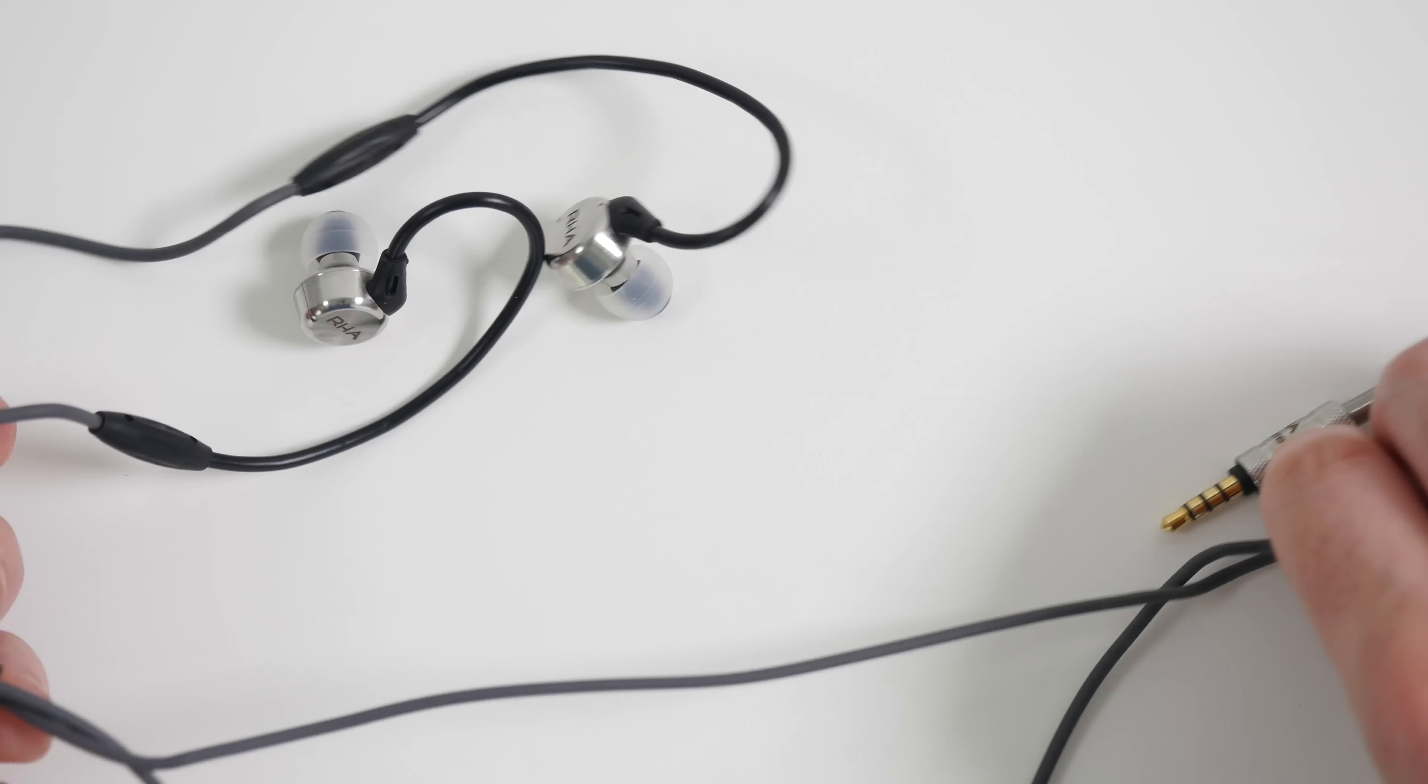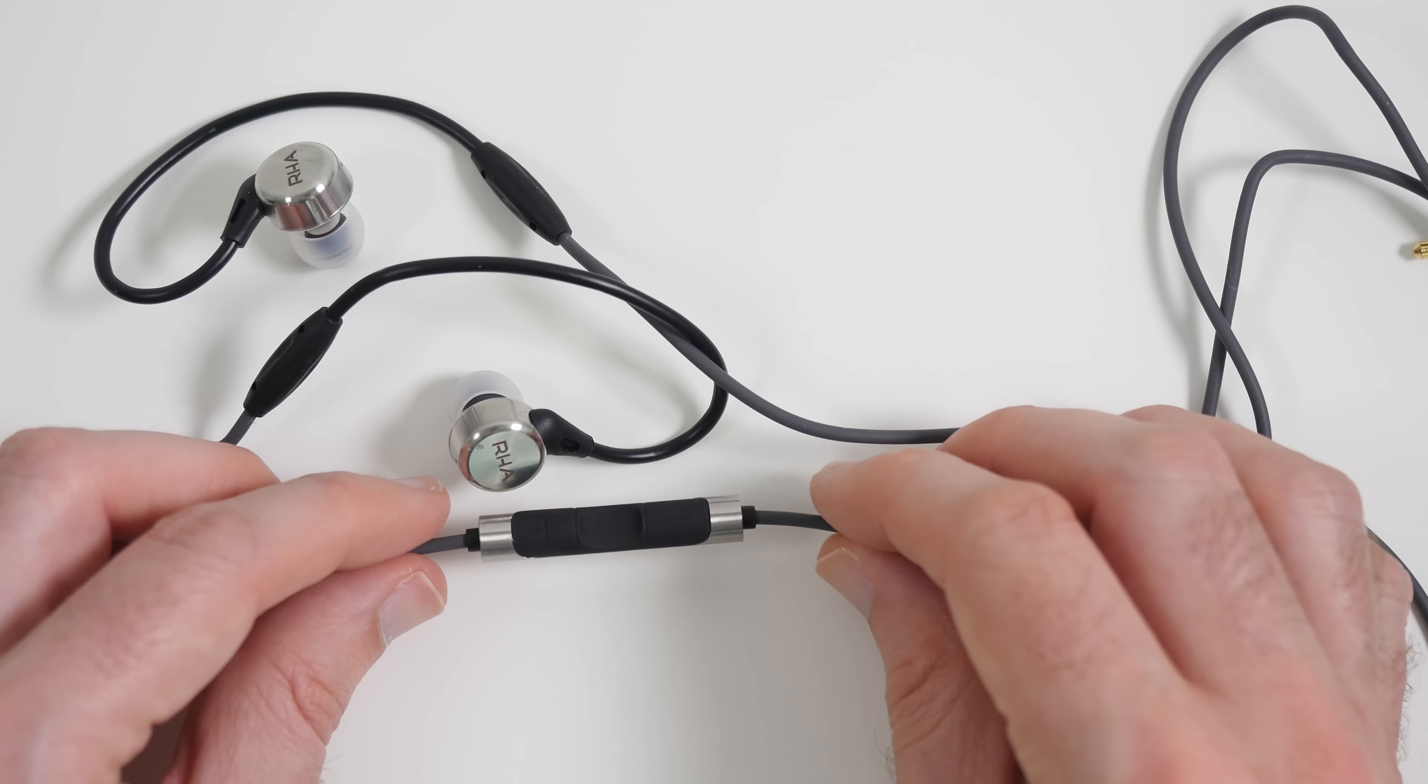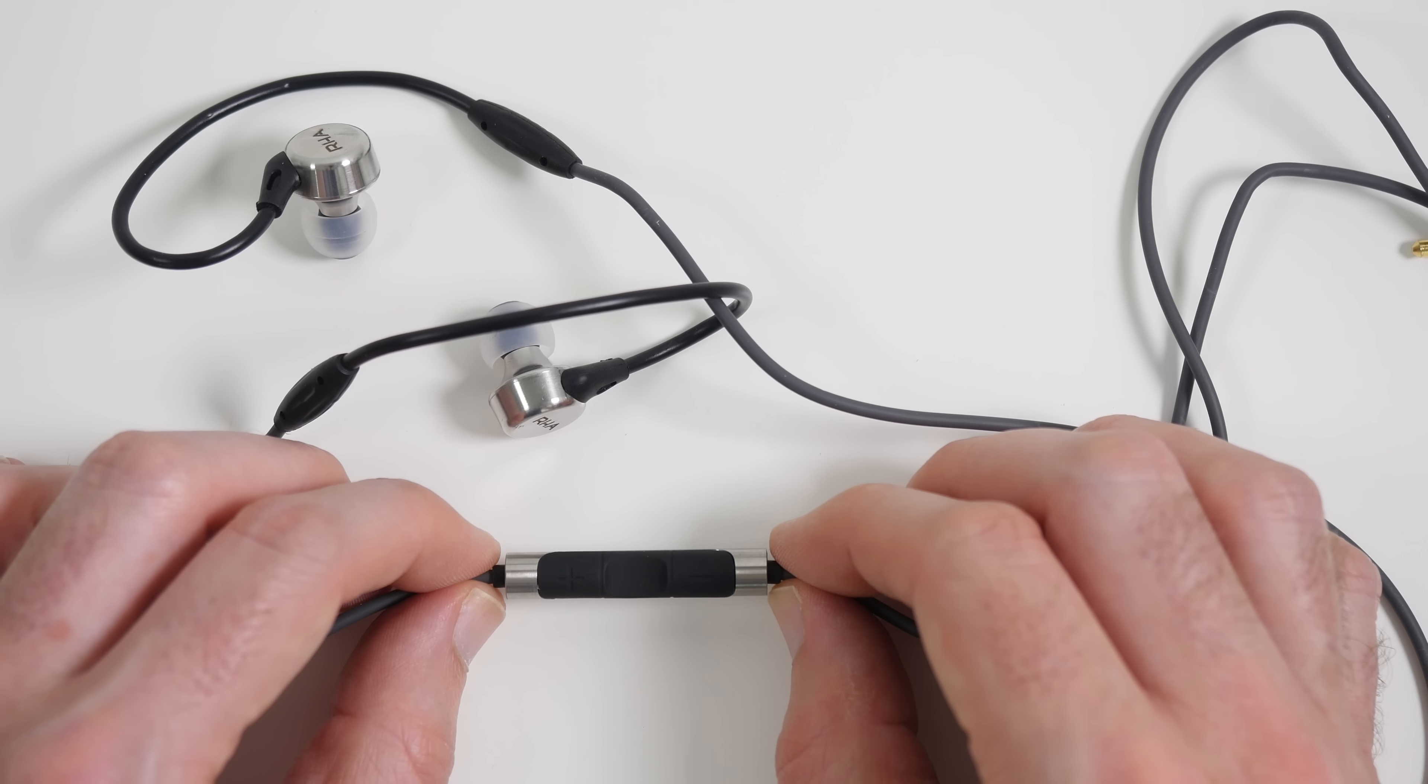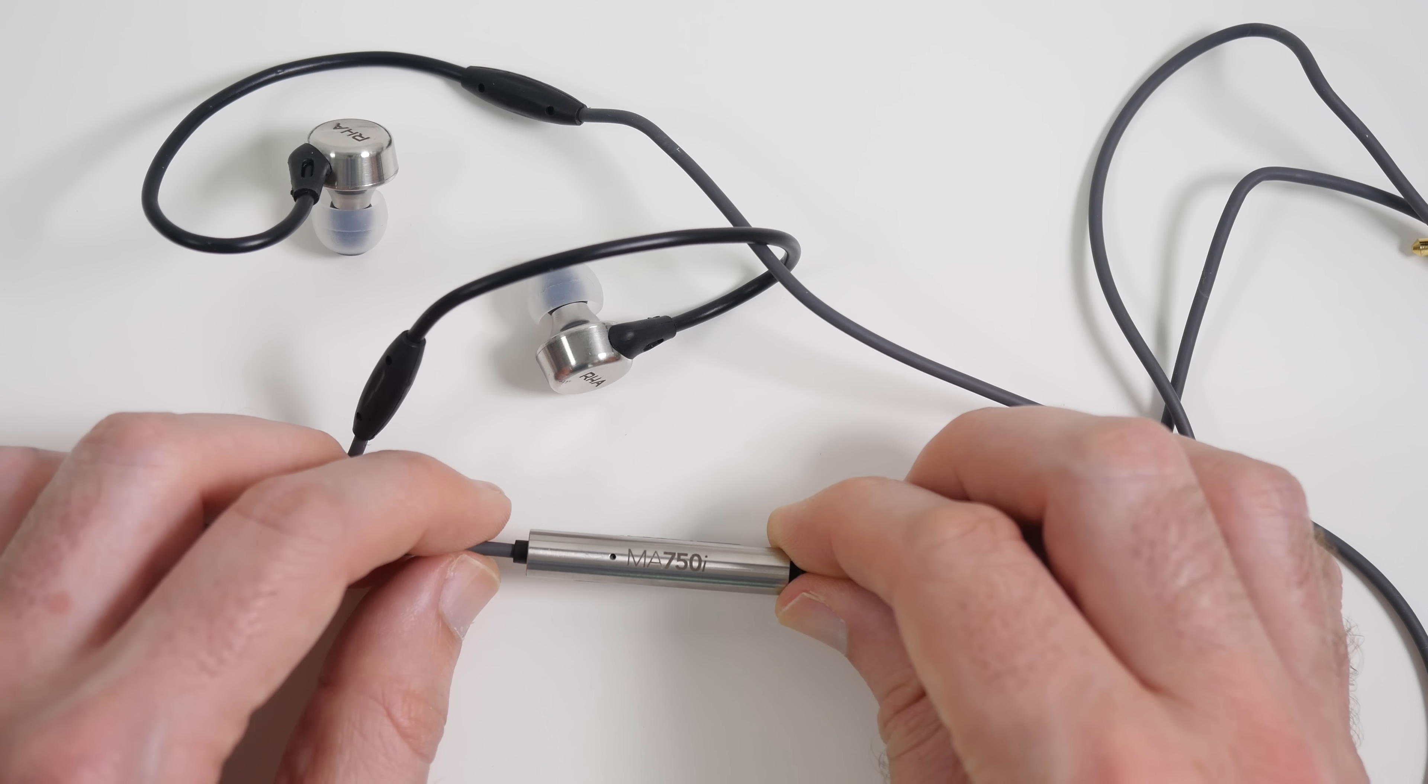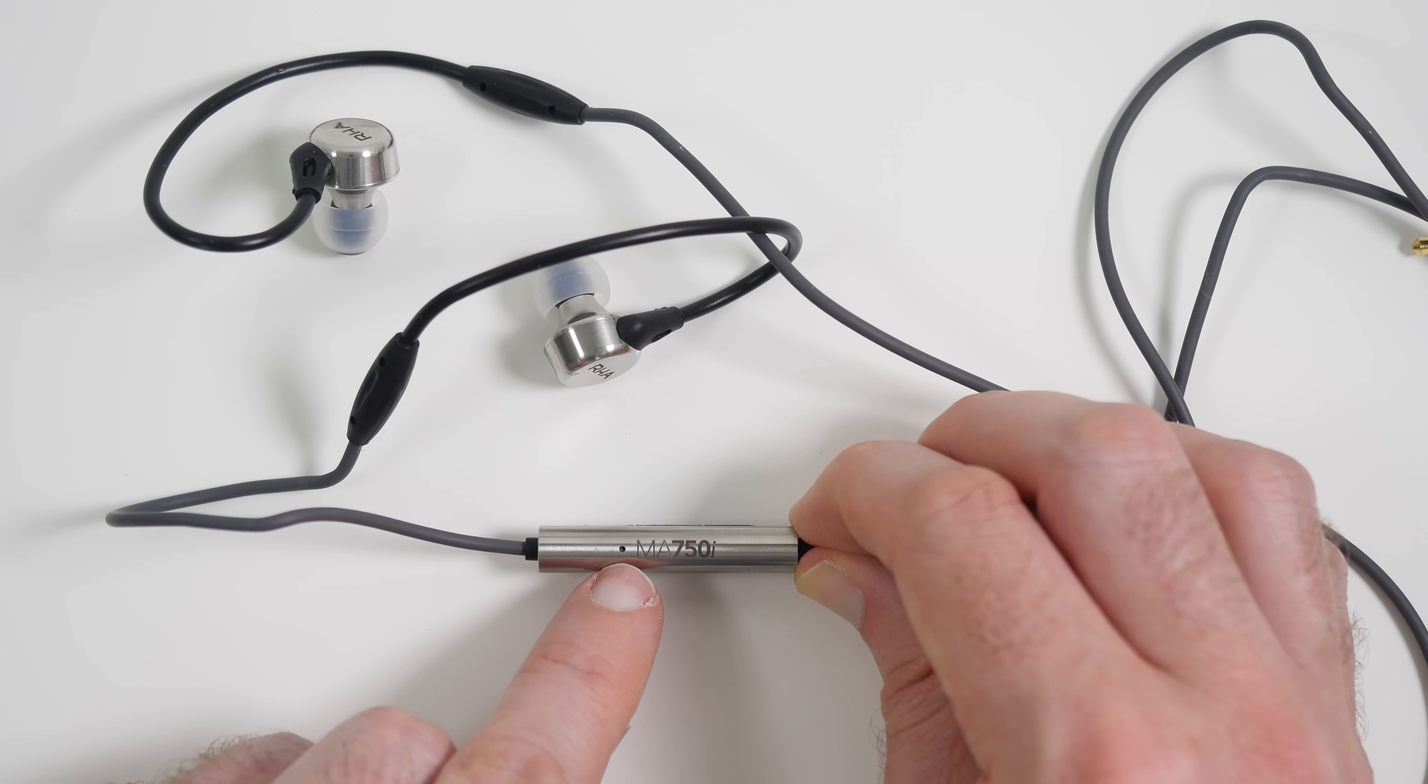And then we go further up the cable and on one of the cables we've got this built-in inline remote control. And in here we have got the volume up and down, we've got track control, we've got push to talk. And around the back where it says MA 750i, just next to the M, we've got the little pinhole microphone.